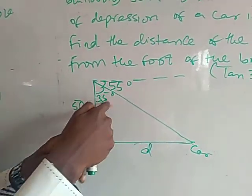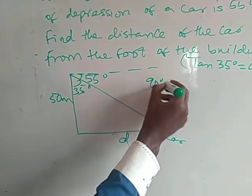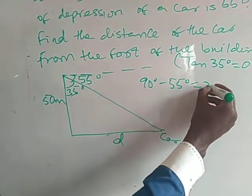So, 90 degrees minus 55 degrees equals 35 degrees. This angle here equals 35 degrees.